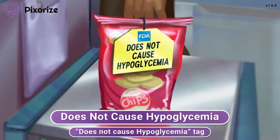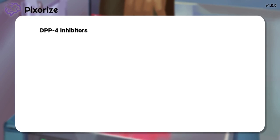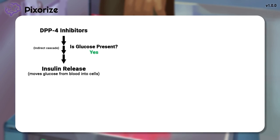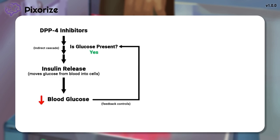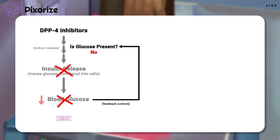To understand why hypoglycemia does not occur, think back to how DPP-4 inhibitors stimulate an indirect cascade to cause insulin release, which then works to reduce blood glucose levels. This indirect cascade maintains the normal feedback controls that prevent the pathway from spiraling out of control. When there's not enough glucose present, insulin release is shut off, preventing any further lowering of blood glucose levels — this is why these drugs usually do not cause hypoglycemia.